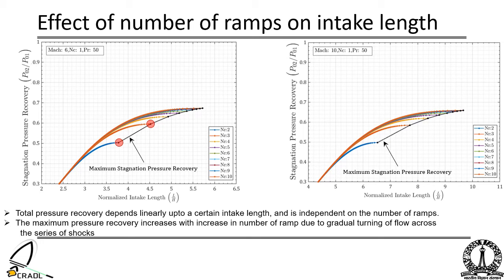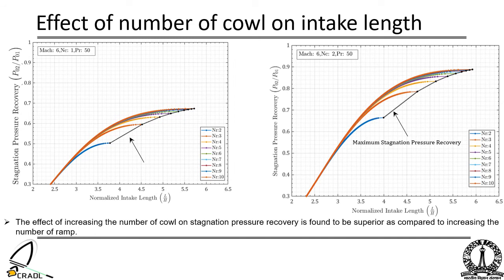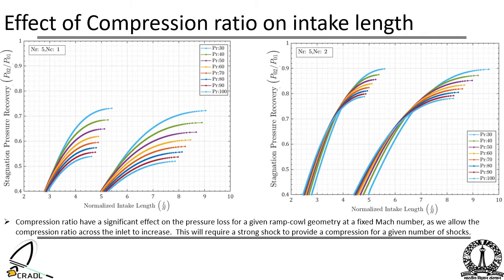However, for a fixed intake length, a corresponding increase in number of ramps from 2 to 3 there is an improvement of 12.8 percent stagnation pressure recovery. Figure shows the comparison of stagnation pressure recovery for a flat cowl and two cowl geometries. The effect of increasing the number of cowls on stagnation pressure recovery is found to be superior as compared to the increase in number of ramps. For instance, for a flight Mach number of 6 with a desired compression ratio of 50 and number of ramps 2, with an increase in number of cowls from 1 to 2, there is a 32 percent increase in peak stagnation pressure recovery.